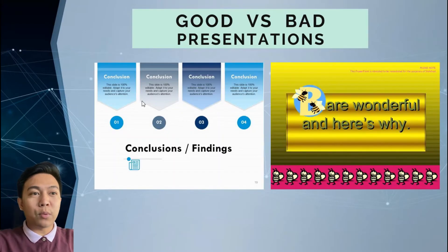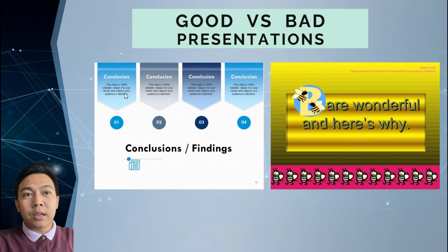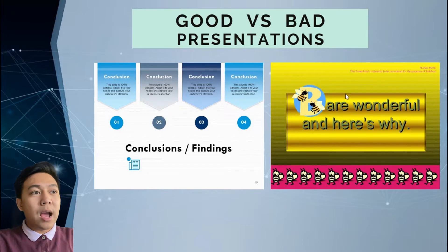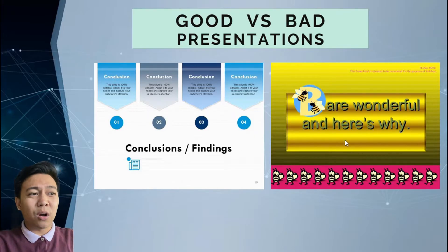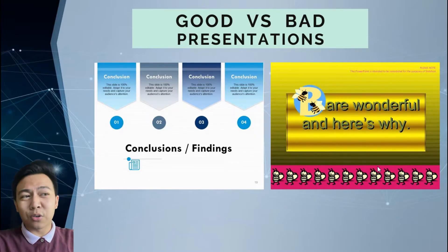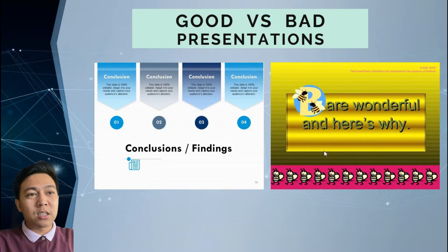Next, let's try to compare between the two. As you can see here, it's more simple. The use of colors is contrasting, and the use of text is very simple. And like here, as you can see, it's quite confusing because the colors are not in contrast. Yellow and pink is not in contrast. The texts are not that readable, and the image is too confusing to see. So between the two, this is a good presentation, and this is a bad presentation.